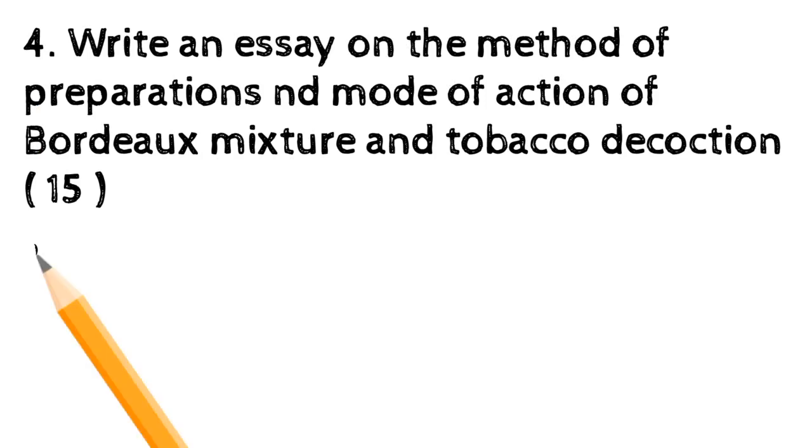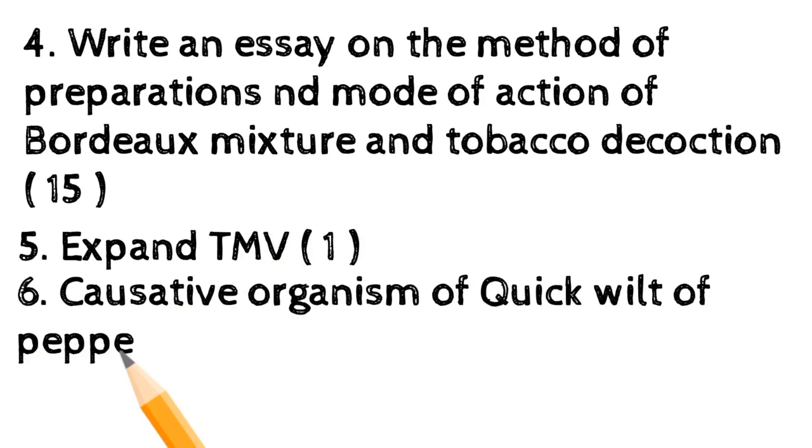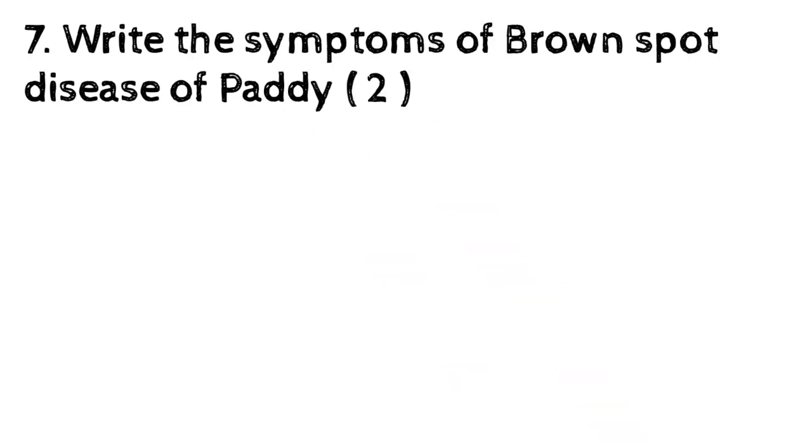5. Expand TMV (1 mark). 6. Causative organism of quick wilt of pepper is (1 mark). 7. Write the symptoms of brown spot disease of paddy (2 marks). Thank you all for watching. Please like, share, comment and subscribe us for more videos. Thank you.